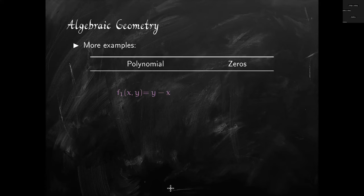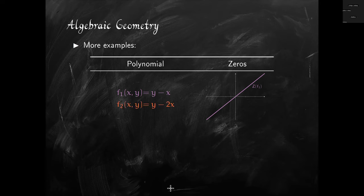Consider the polynomial y minus x. Now we have two variables. This is zero when y equals 5 and x equals 5, or when y equals 7 and x equals 7 — basically whenever the x-coordinate and the y-coordinate are the same. So if we plot the set of zeros in two dimensions, we get a line through the origin. Similarly, for the polynomial y minus 2x, the zero set is a line through the origin where y is exactly twice x — a different line, but also through the origin.